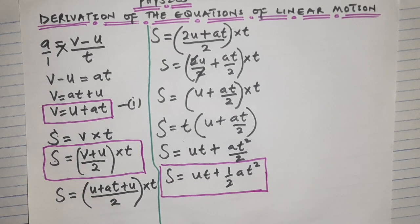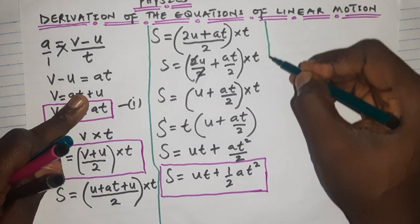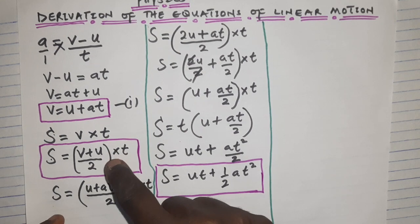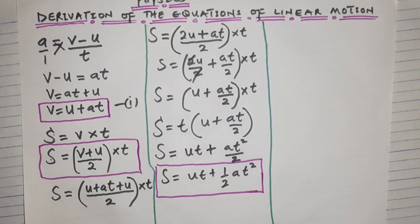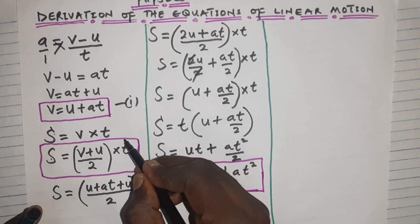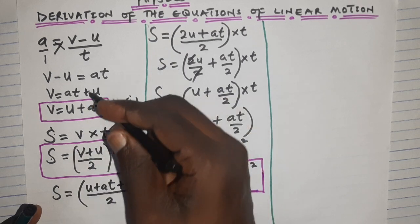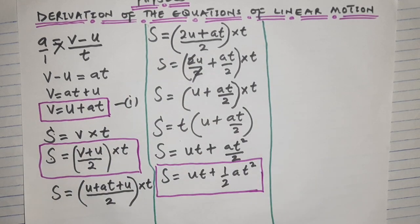We still have one more equation to prove: v² = u² + 2as. We are going to use the distance equation again. I'll make t the subject from Equation 1 and substitute it into the distance formula.